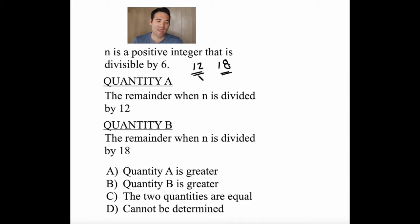Let's find out. When n is 12, what is the remainder when 12 is divided by 12 for quantity A? How many times does 12 go into 12? One time, and there's a remainder of 0. There's nothing left over.